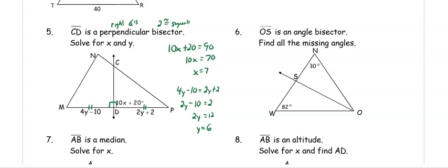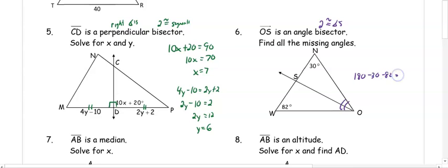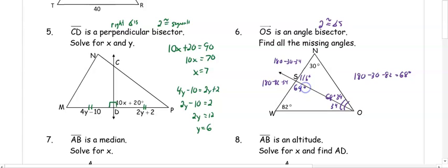In number six, we want to find all the missing angles given that OS is an angle bisector, which means it creates two congruent angles. To find the missing angle, we do 180 minus 30 minus 82 and get 68 degrees. That 68-degree angle is bisected into 34 and 34. Then we do 180 minus 30 minus 34 to get 116, and 180 minus 82 minus 34 to get 64 degrees.